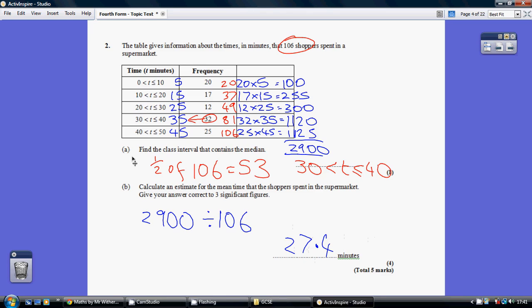Now, back to part A. Find the class interval that contains the median. Now, remember, median is the middle shopper. So, halfway through this 106 shoppers. 106 halved is 53. So, we're looking for our 53rd shopper.